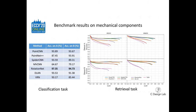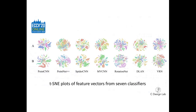RotationNet outperforms the other methods on both datasets in the classification task. We observed that the performance of RotationNet decreased on the retrieval task. This is because RotationNet predicts view orders of given multi-views to learn rotation-invariant features. However, the view orders of solid-of-revolution shapes of mechanical components are hard to determine. To see the similarity of geometric features from descriptors, we performed the TSNE method. We observed that the tighter the clusters, the higher the retrieval accuracy. For example, features from PointCNN are tightly grouped by the same colors, but features from VRN were not well clustered. As a result, PointCNN performed better than VRN on both classification and retrieval tasks.